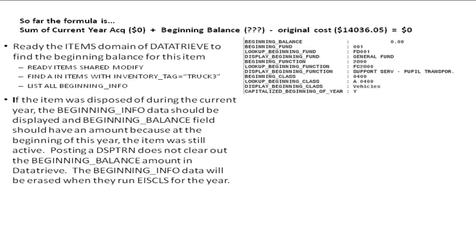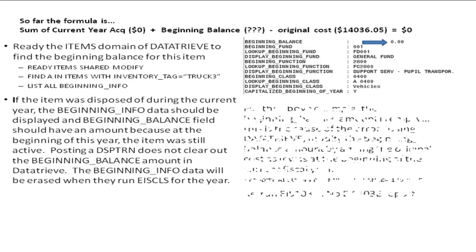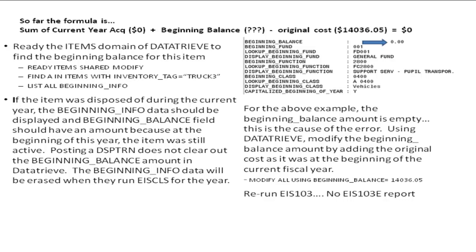Posting a disposition transaction does not clear out the beginning balance amount in the data tree. The beginning info data, including the beginning balance amount, will be erased when the district runs EIS close for the year. In our example, the beginning balance amount is empty — this is the cause of the error. Using data tree, modify the beginning balance amount by adding the original cost as it was at the beginning of the fiscal year. Because no acquisitions were added during the year, the current original cost was the original cost at the beginning of the year.